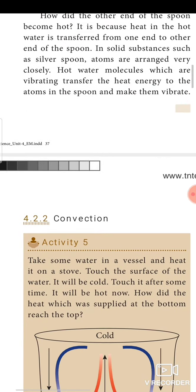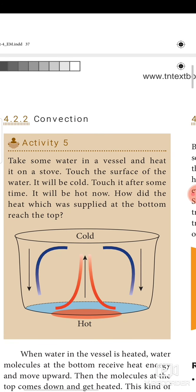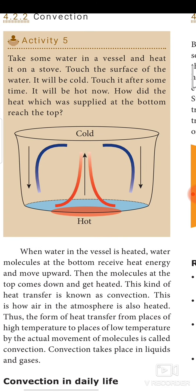Next, convection. Take some water in a vessel and heat it on a stove. Touch the surface of the water — it will be cold. Touch it after some time — it will be hot. How did the heat supplied at the bottom reach the top? When water in the vessel is heated, water molecules at the bottom receive heat energy and move upward; then the molecules at the top come down and get heated. This kind of heat transfer is known as convection. Unlike conduction where molecules don't move, here the water molecules themselves move from bottom to top and top to bottom. Convection is the form of heat transfer from a place of higher temperature to a place of lower temperature by the actual movement of molecules. Convection takes place in liquids and gases.